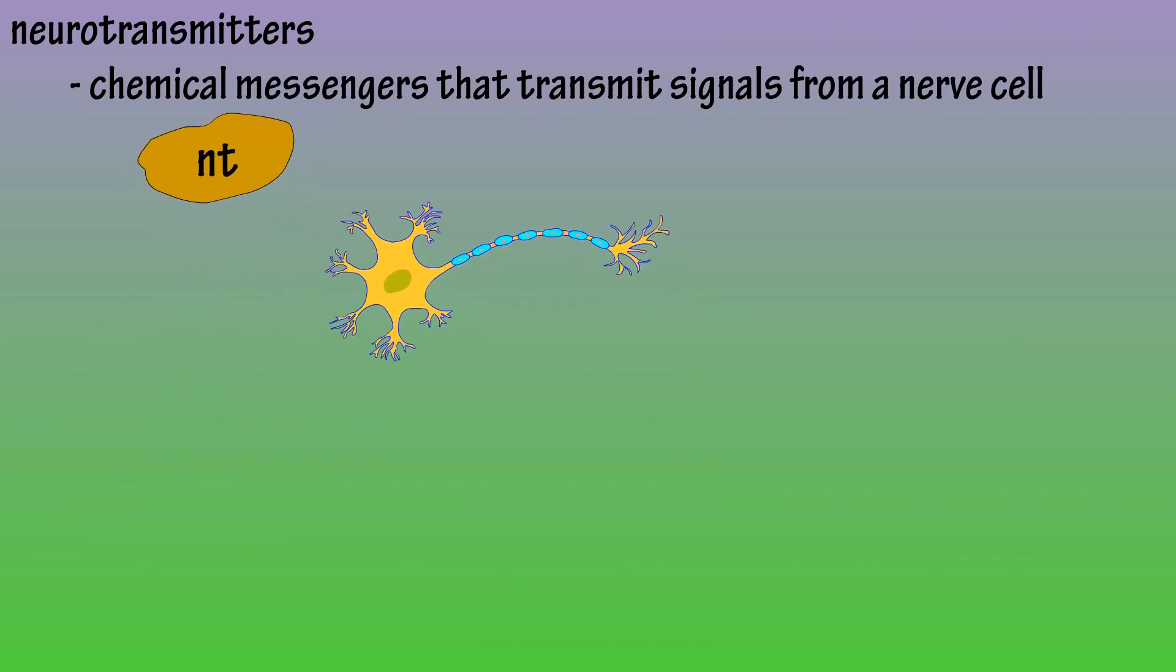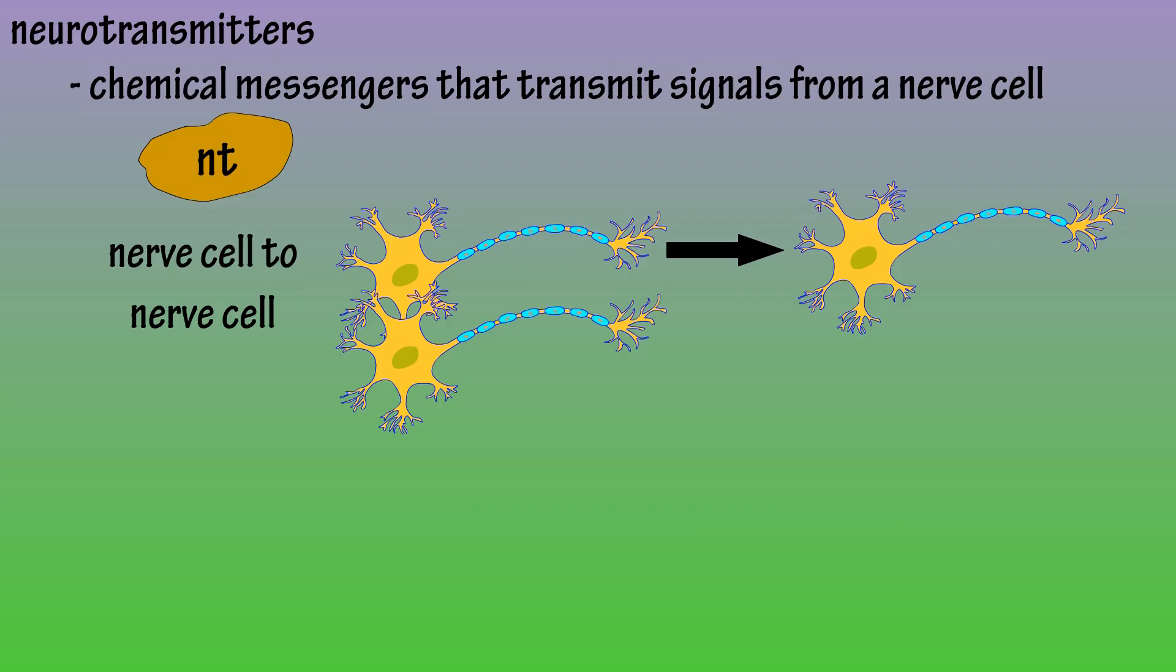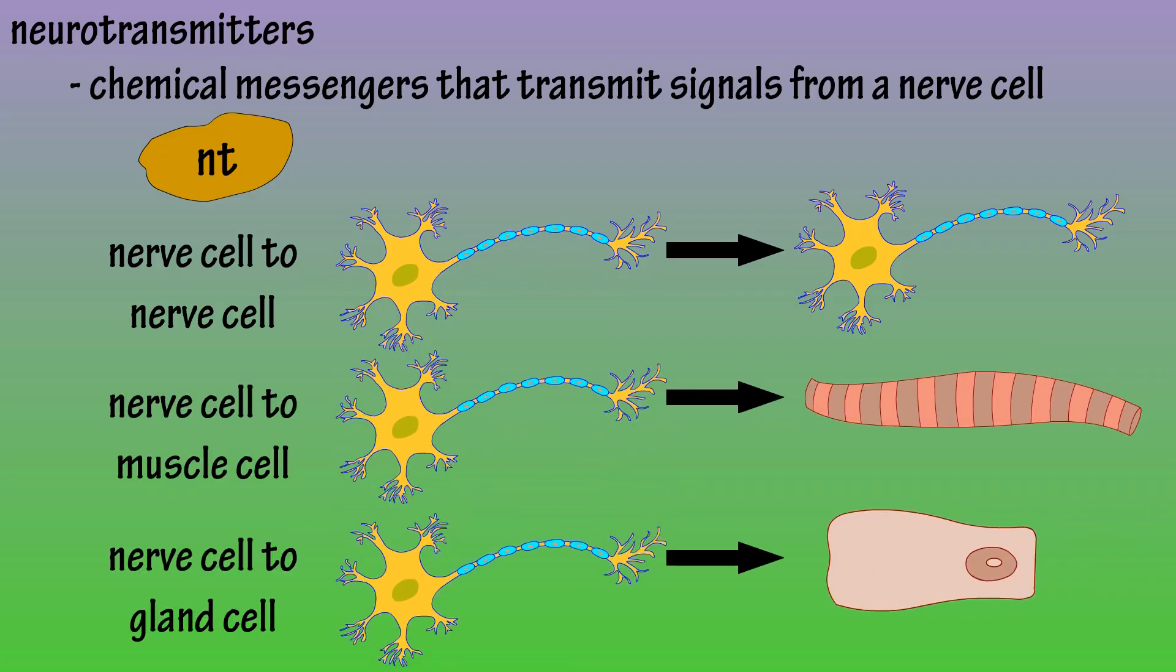These signals can be passed from one nerve cell to another, from a nerve cell to a muscle cell, or to a gland cell.